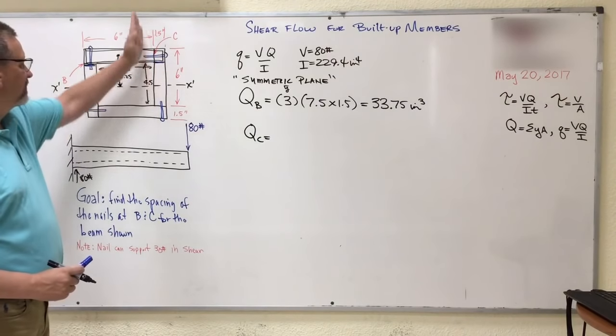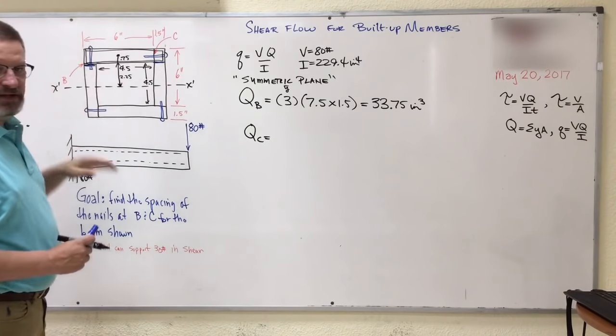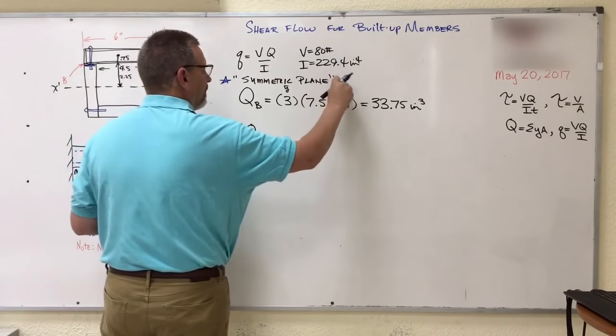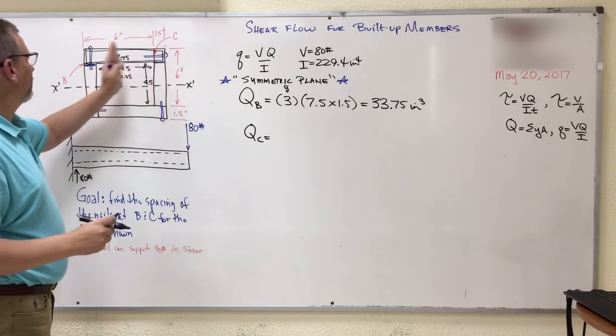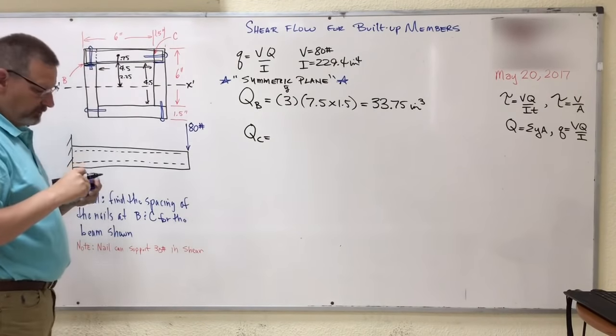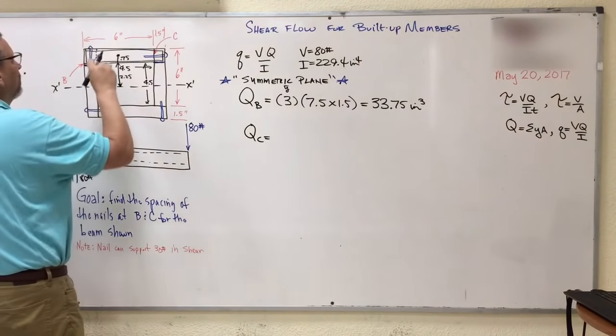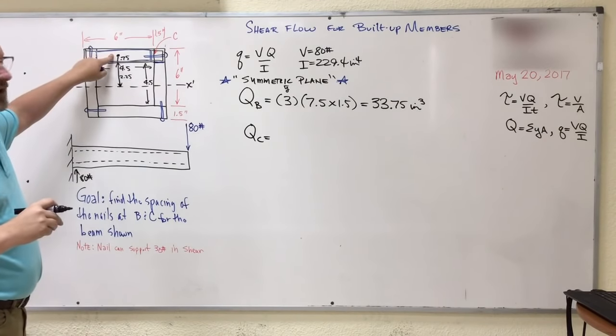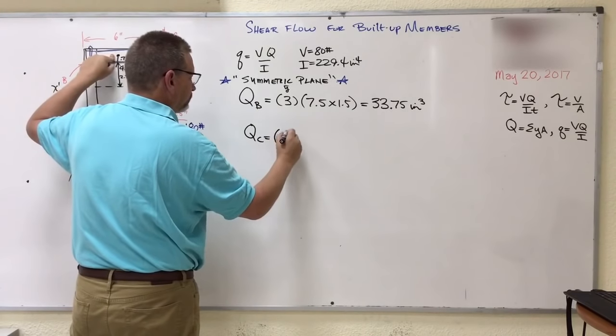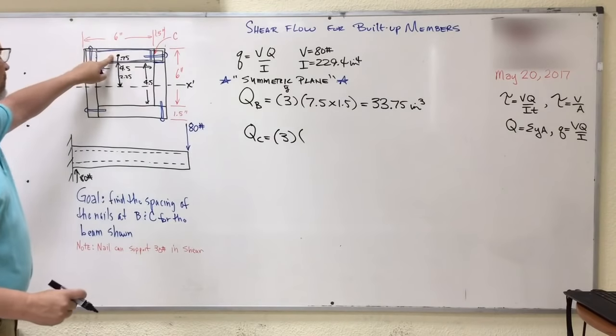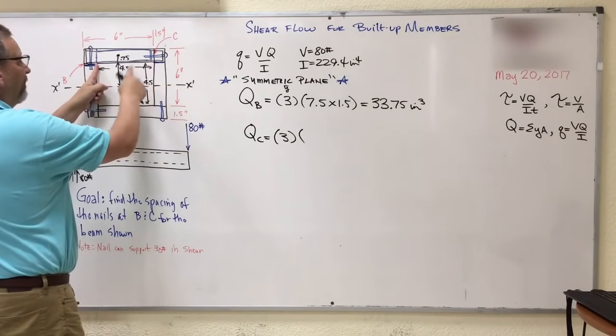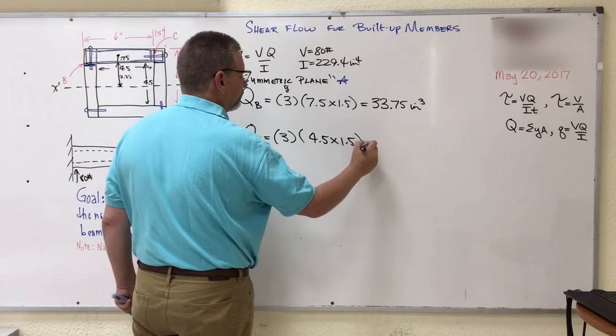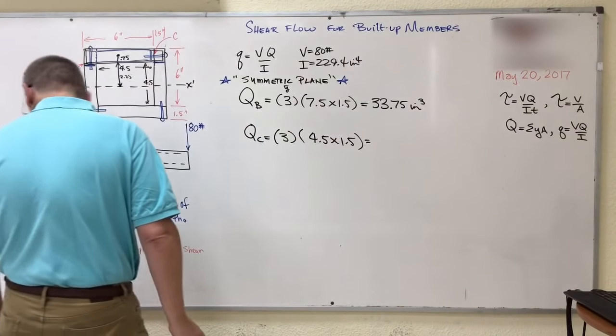So if I'm going to tear through point C now, which is a vertical, where do I tear it through over here? Again, it has to be a symmetric plane, right? Let's put a star by that. Which means if I tear vertical over here, I've got to tear vertical over here. So I'm going to tear through right there. So for this one, the area is this box right here. Now, this has the same centroid as the first box. So the 3 is still going to be there. So what is the area this time going to be? Well, this length here is 4.5, and the height is 1.5. So 4.5 times 1.5. And that is 20.25.